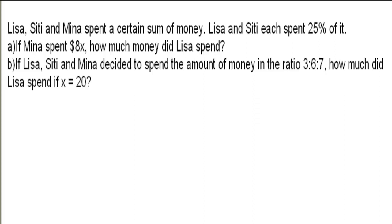Part B: if Lisa, Citi and Mina decided to spend the amount of money in the ratio 3 is to 6 is to 7, how much did Lisa spend if X equals 20? Let us first highlight all the important facts in the question. We have Lisa and Citi each spend 25% of the money, Mina spent 8X dollars, the ratio is 3:6:7, and X equals 20.